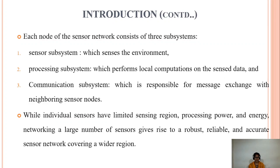The sensor network consists of three subsystems: sensor subsystem, processing subsystem, and communication subsystem. The sensor subsystem senses the environment. The processing subsystem performs local computations on sensor data. The communication subsystem is responsible for exchanging messages by using neighboring sensor nodes.